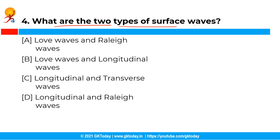The next question is: what are the two types of surface waves? You have the following options and the correct answer is option A, that is love waves and Rayleigh waves. Surface waves travel parallel to the Earth's surface and are the lowest and the most damaging. Surface waves are further divided into love waves and Rayleigh waves.